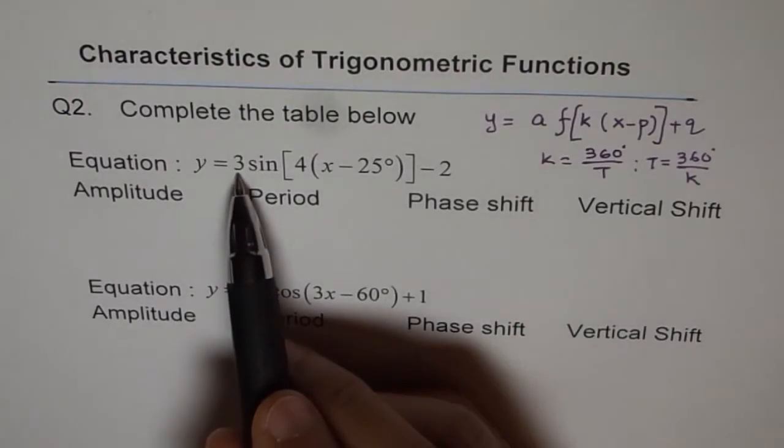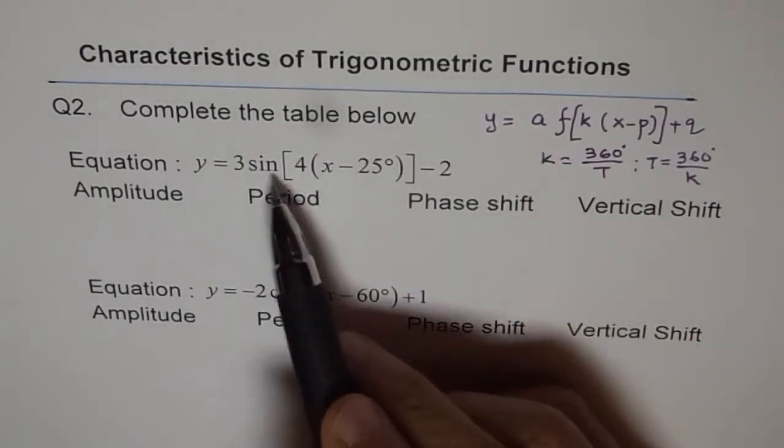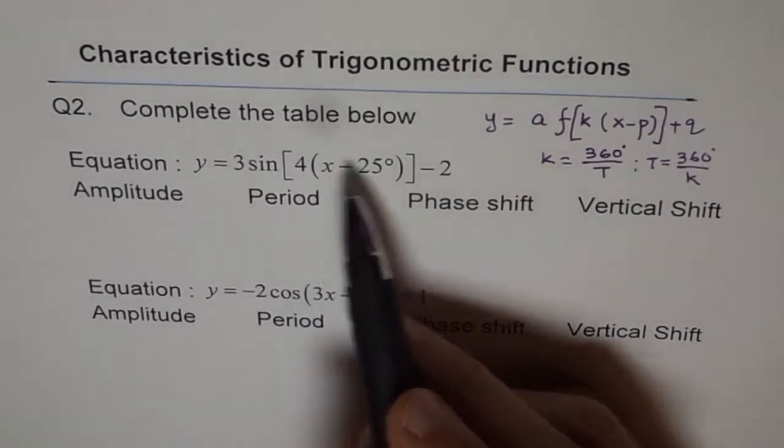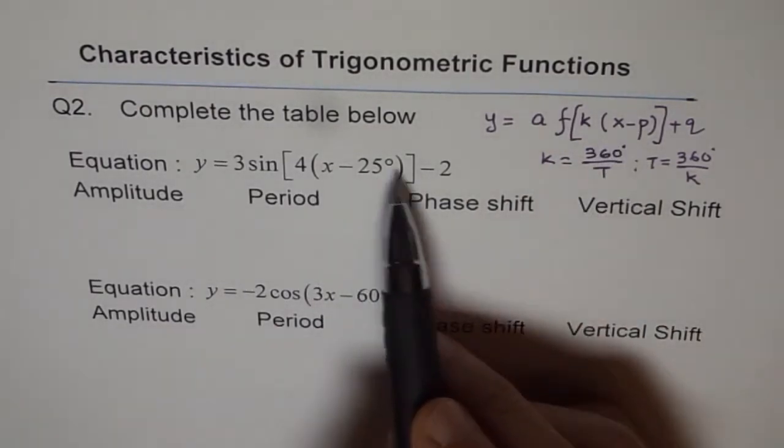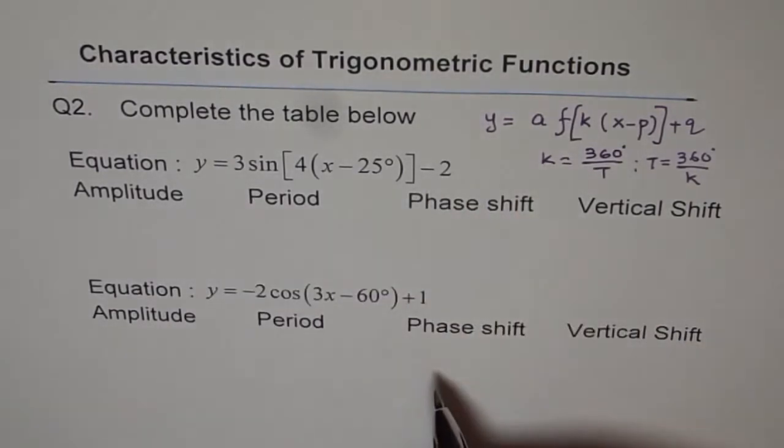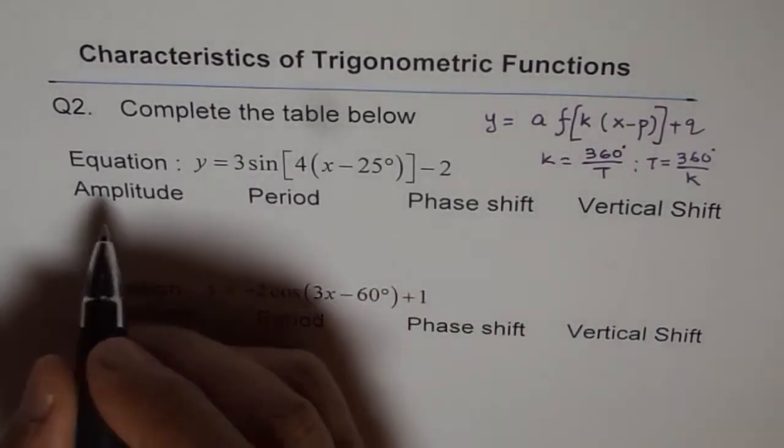Okay, so let's compare it. So we got 3 sine. So the function is sine. It could be cosine as given here. K is 4 for us. And p, the phase shift is 25, and the vertical shift is minus 2. So now we can write down all our values. It is as simple as that. So 3 goes here.